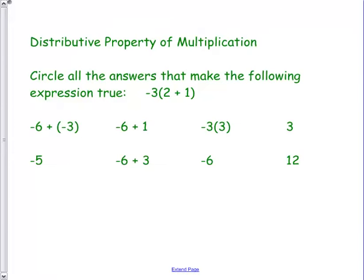All right, so let's circle all the answers that make the following expression true. So some of these are simplified. Some of them aren't. So let's look at this negative 3 times 2 times 1.